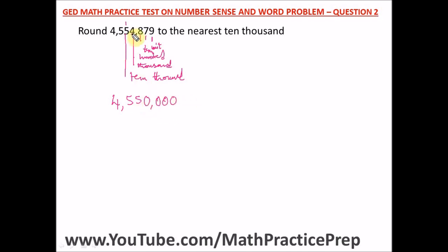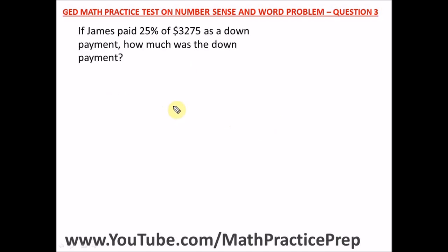The digit to the right of the ten-thousands place is 4, which is less than 5, so we cannot round up. The 5 remains the same and all digits to the right become zeros. Our answer is 4,550,000 — that is four million, five hundred and fifty thousand to the nearest ten thousand.